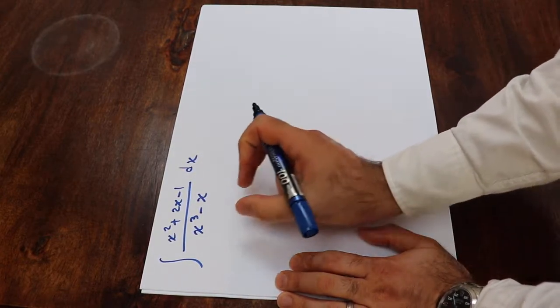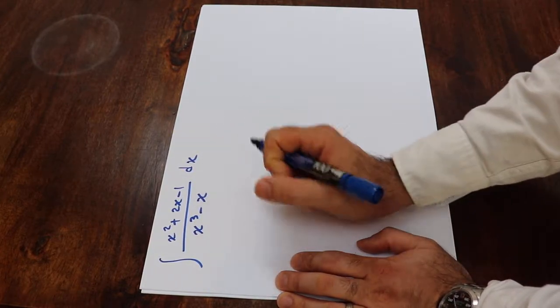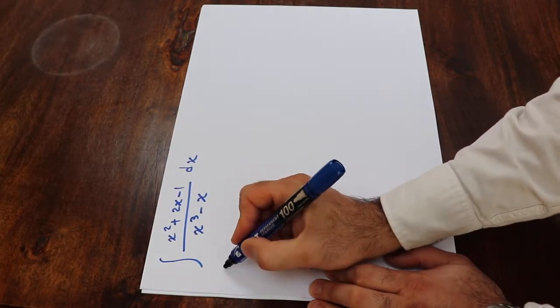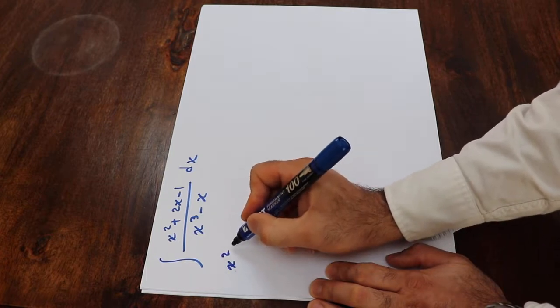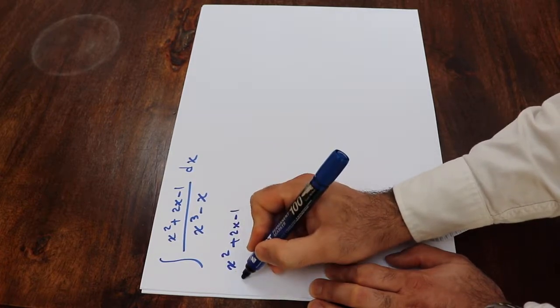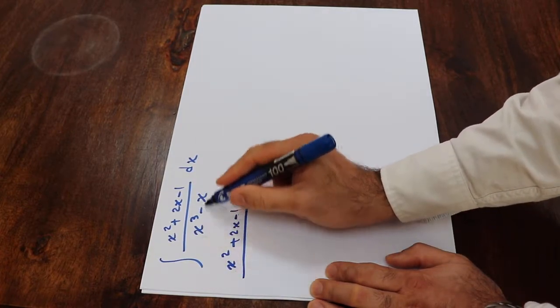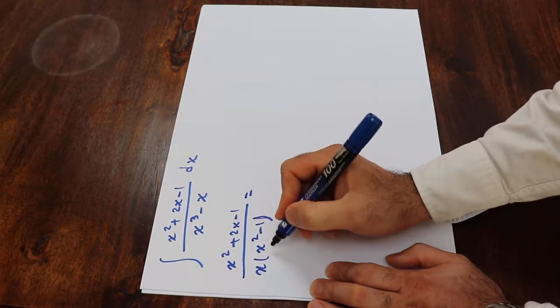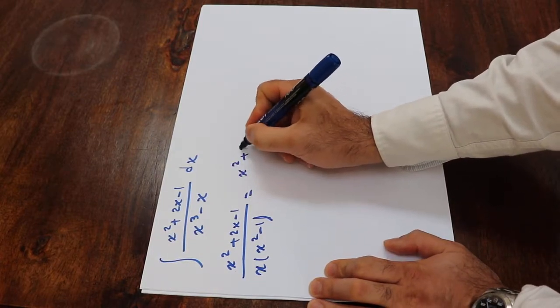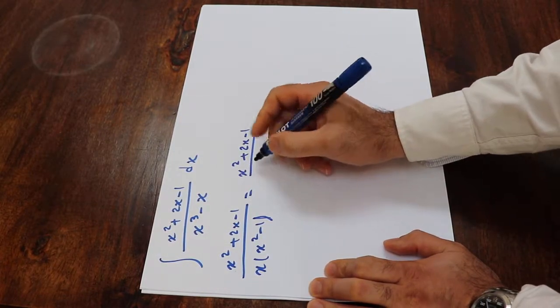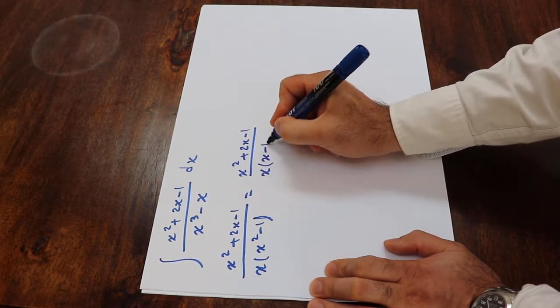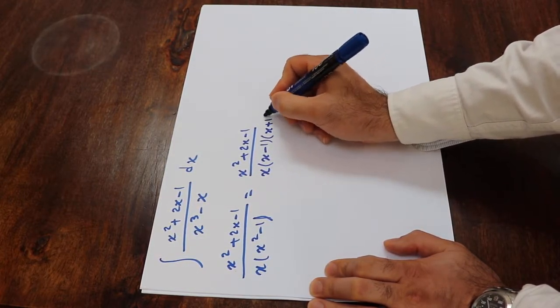To solve this integral, you have to first express this rational function as the sum of partial fractions. So here, you can write x² plus 2x minus 1 divided by, so here I factor x times x² minus 1. And you can rewrite this one as x² plus 2x minus 1 divided by x times x minus 1 times x plus 1.